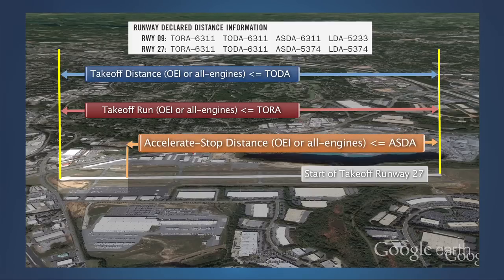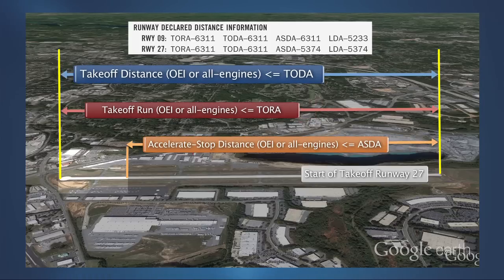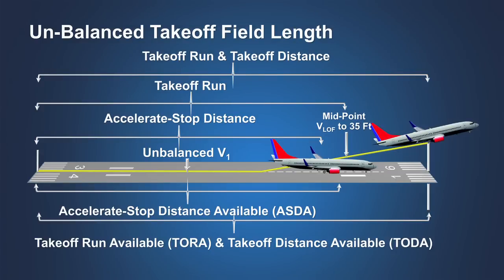If the runway remaining beyond the end of the accelerate stop distance available is included in the takeoff run available and the takeoff distance available, then by using the unbalanced V1, this remaining runway may be used for calculating the takeoff run and takeoff distances to permit an increase in maximum allowable takeoff weight. However, the use of unbalanced takeoff data is an involved process. Use of an airplane performance planning software tool or an airport engineering service that furnishes a runway analysis is recommended.